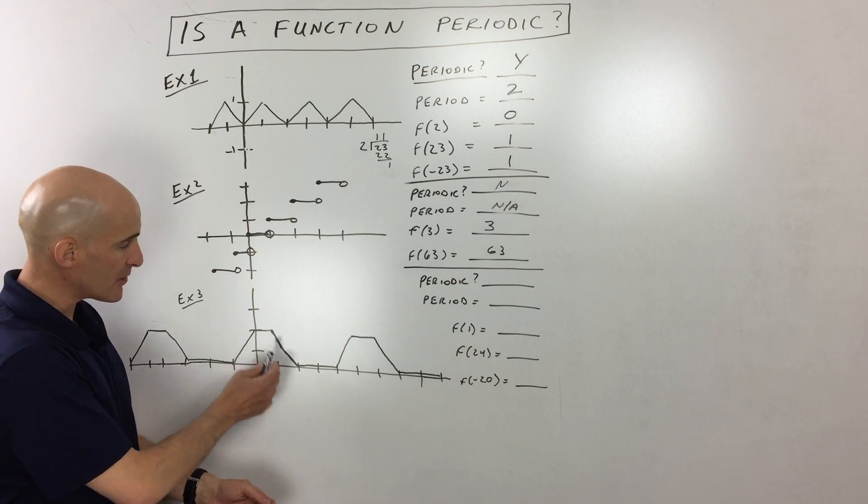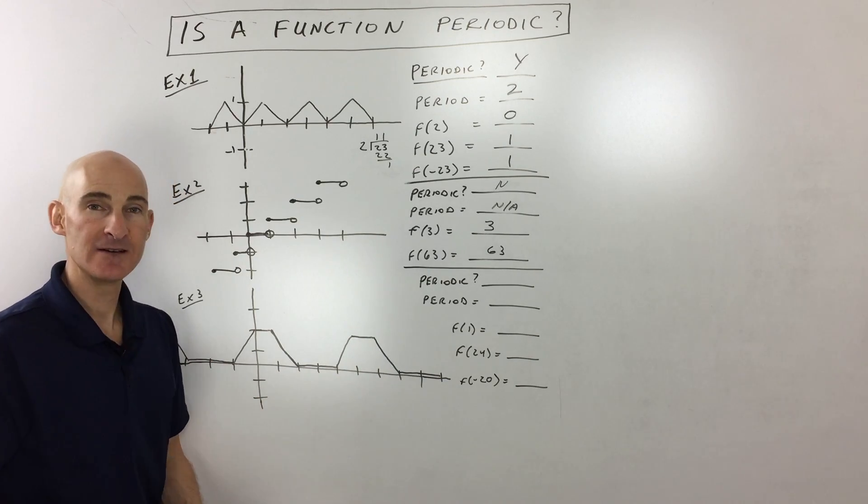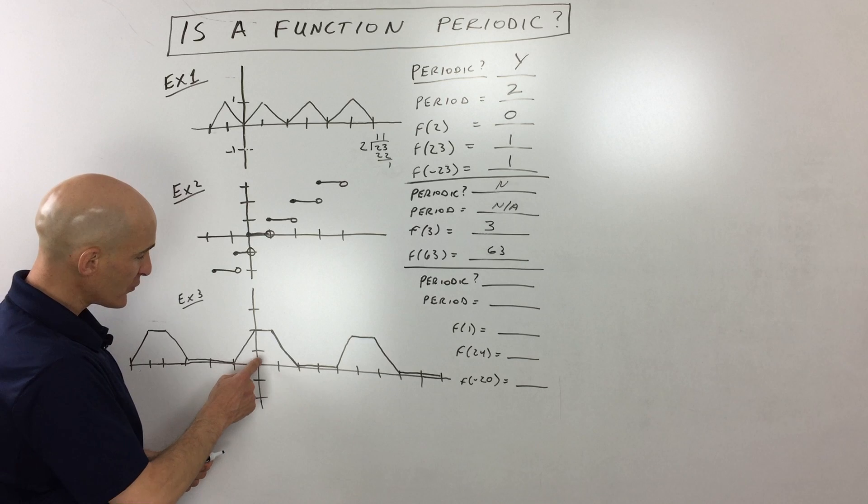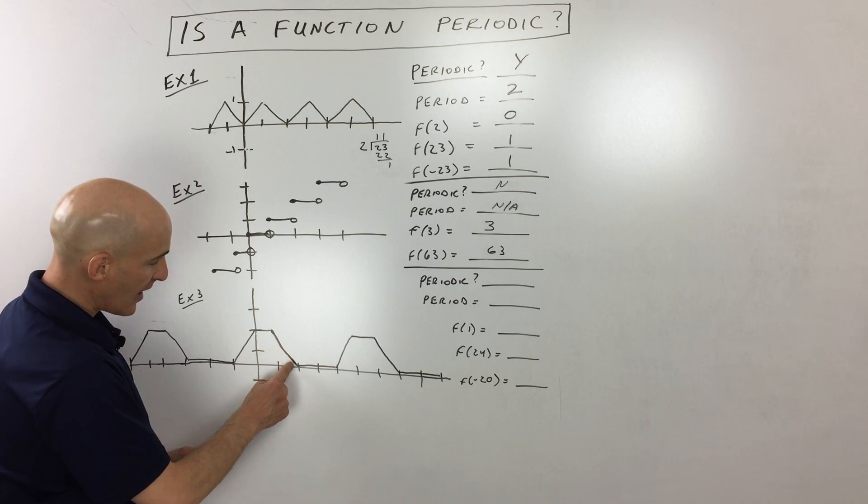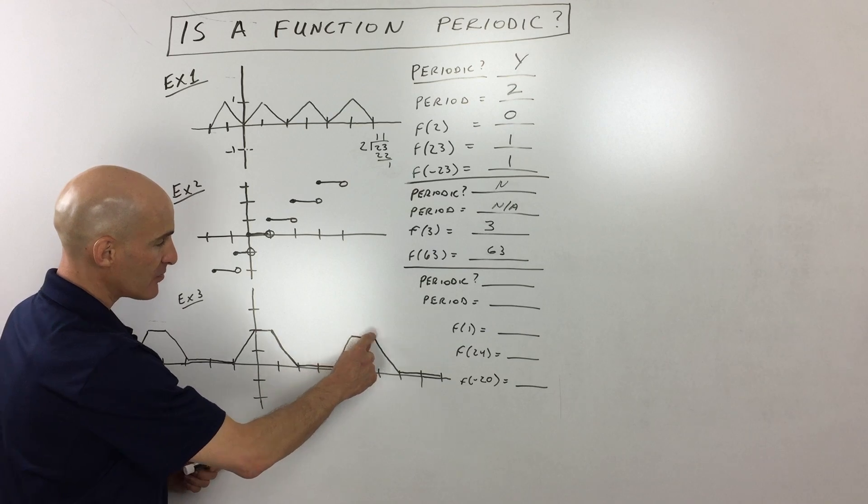But let's get into example number three. This one, what do you think? Is it periodic? Does that pattern repeat? Well, let's take a look. So if we're starting here, it goes like a plateau and then it kind of goes down and then it plateaus and then it goes up and then it plateaus.